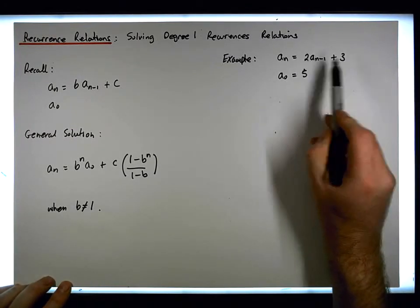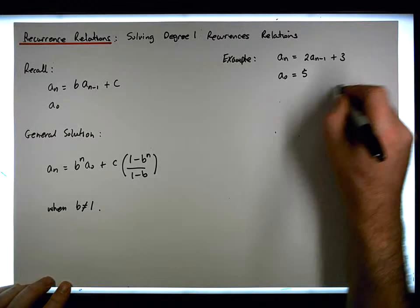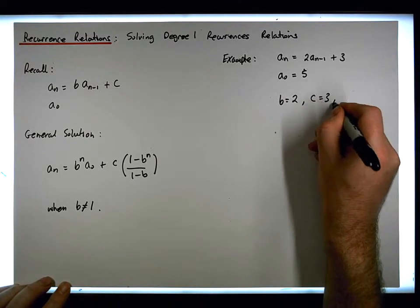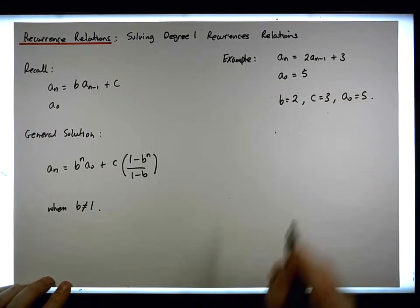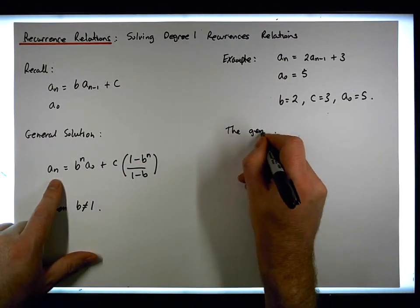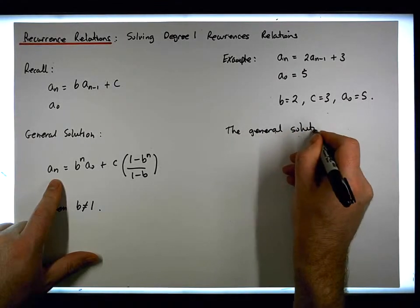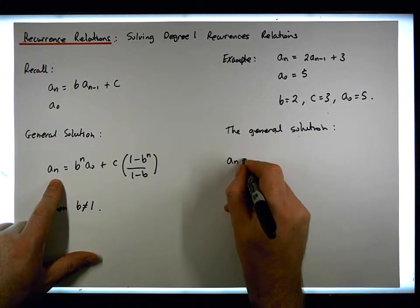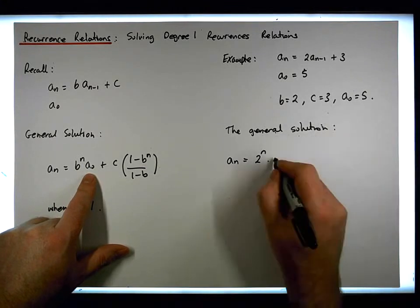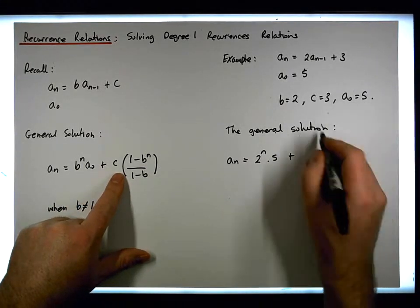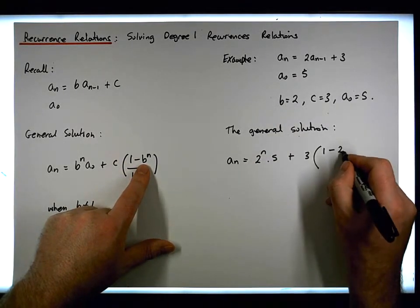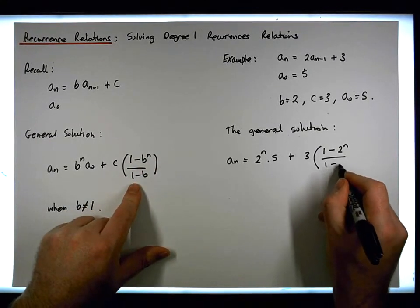Let's write down our values: b is two, c is three, and a_0 is five. The general closed-form solution is then a_n equals two raised to the power of n, times a_0 which is five, plus c which is three, times (1 minus two^n) divided by (1 minus two).